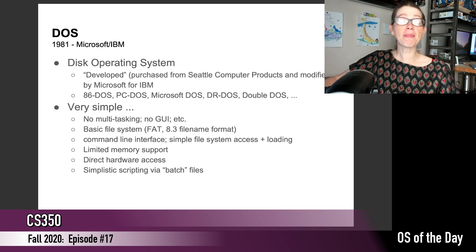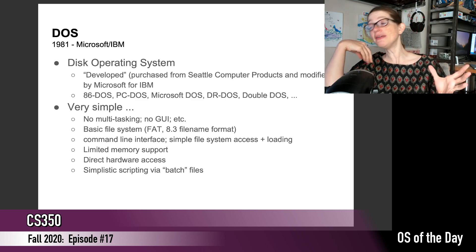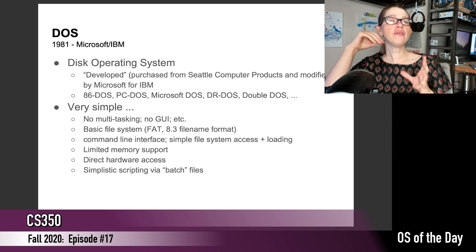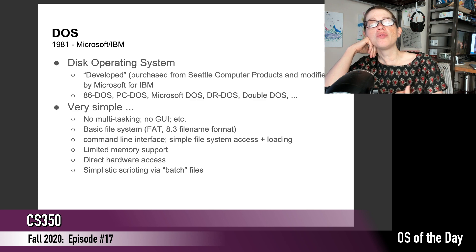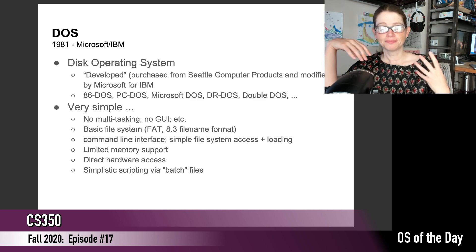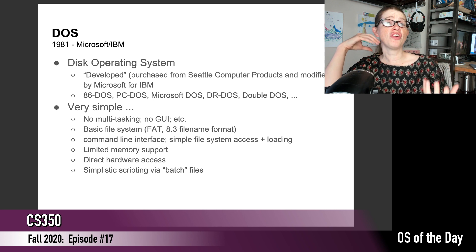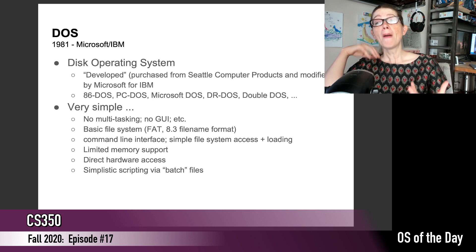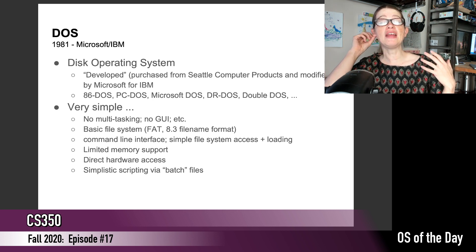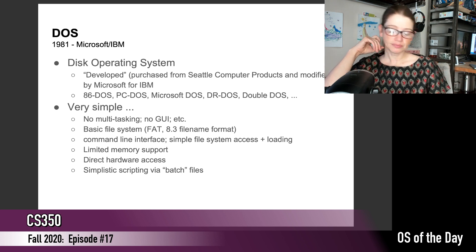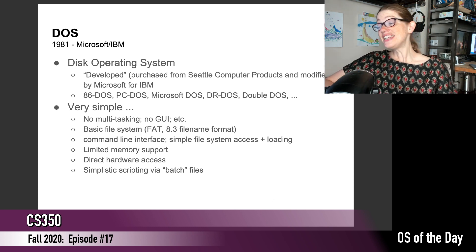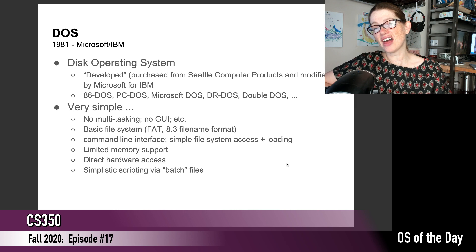Another interesting thing about early versions of DOS is they didn't actually separate kernel from user — there was no concept of kernel mode versus user mode. Things were obviously faster because you're not really dealing with system calls, but you also had direct hardware access, which meant getting the right version of DOS that matched your computer was pretty important. It did spark a basic kind of batch scripting, which can be fun to play with.